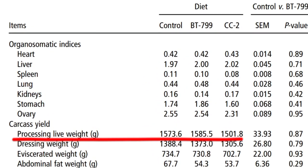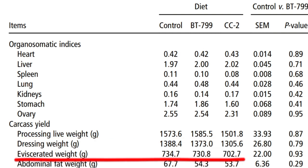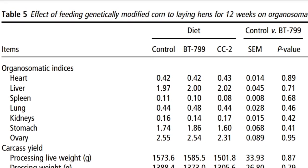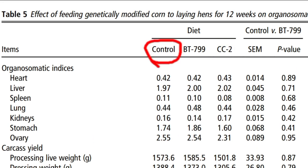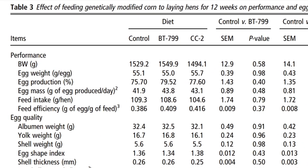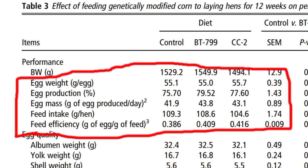Looking at the table, you can see that live weight was almost similar throughout the study. Also the dressing weight and eviscerated weight show no significant difference. In carcass characteristics such as abdominal fat, breast, and thigh, there is no significant difference between hens fed on genetically modified grains versus non-genetically modified maize. Regarding egg weight, egg production percentage, egg mass, feed intake, and feed efficiency, the numbers are almost identical, meaning the difference is insignificant.